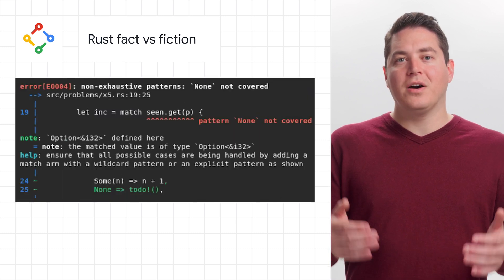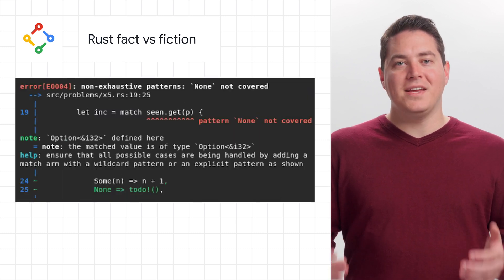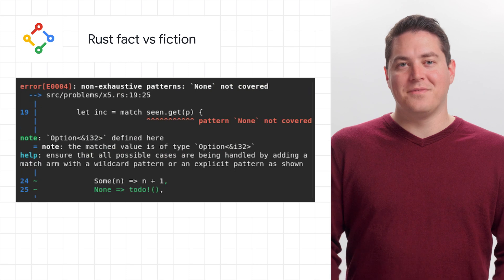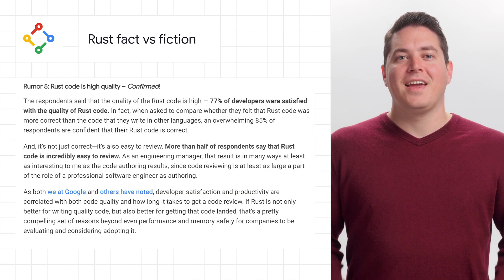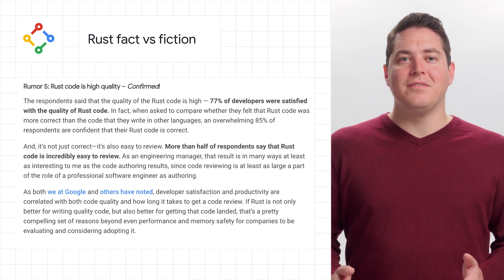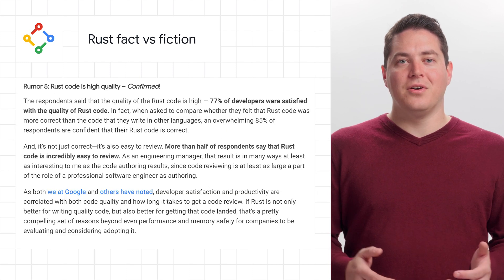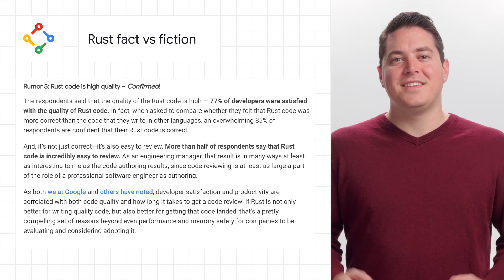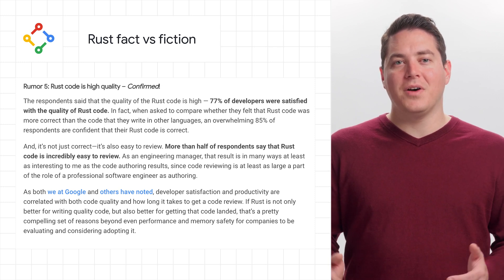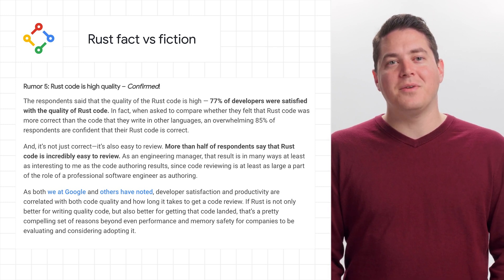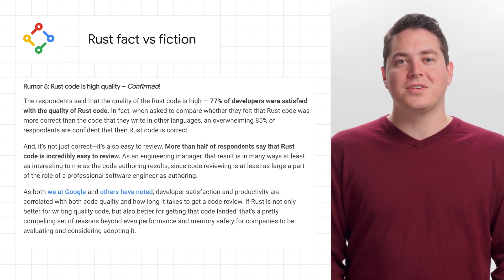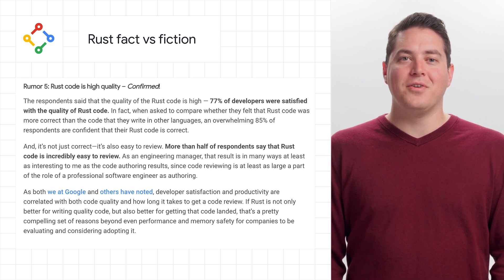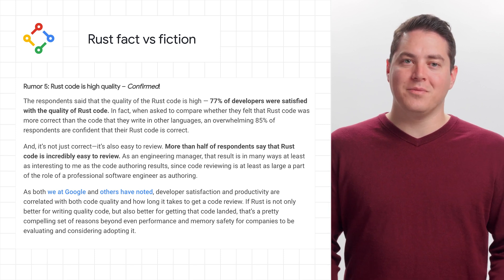Rumor number four is about Rust's amazing compiler messages — which is confirmed. And rumor number five is that Rust's code is high quality — which is also confirmed. 77% of developers were satisfied with the quality of the Rust code, and more than half say that the code is incredibly easy to review.